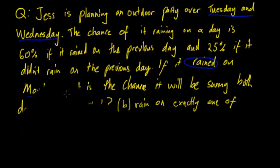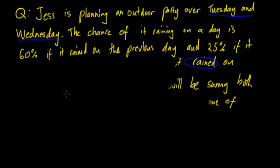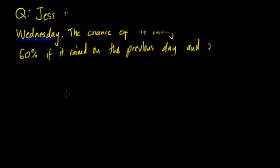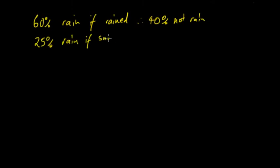So the first thing is to get the information and write that down. You approach this question by saying that there was 60% chance of rain if it rained, and then it was 25% rain if sunny. Therefore a 75% chance sunny if rained, and 40% chance sunny if rained. So these are the four probabilities that you need to work out.